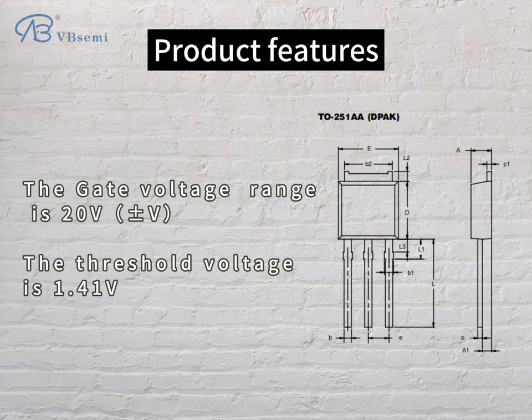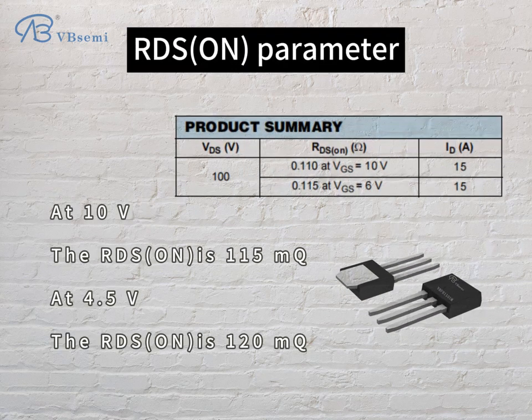The gate voltage range is 20V and the threshold voltage is 1.41V. For the RDS-ON parameter, at VGS=10V the RDS-ON is 115mΩ, and at VGS=4.5V the RDS-ON is 120mΩ.